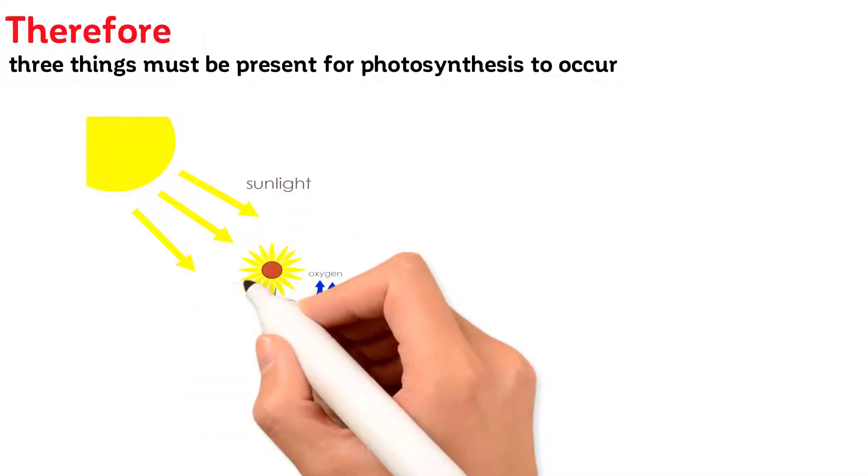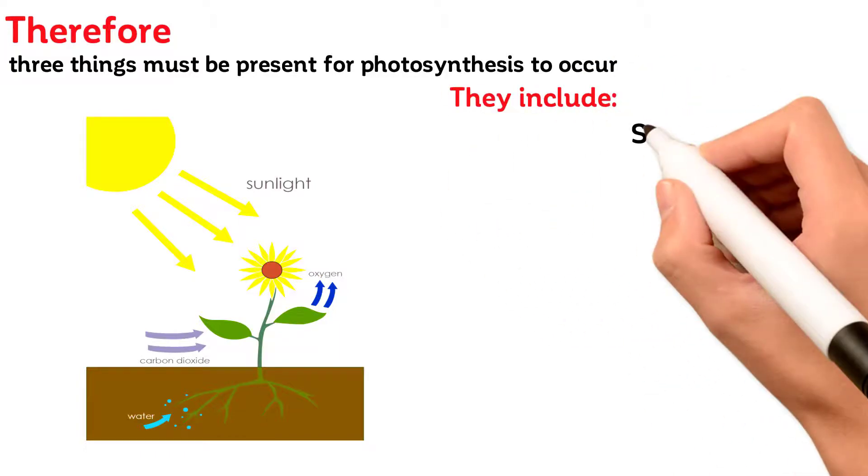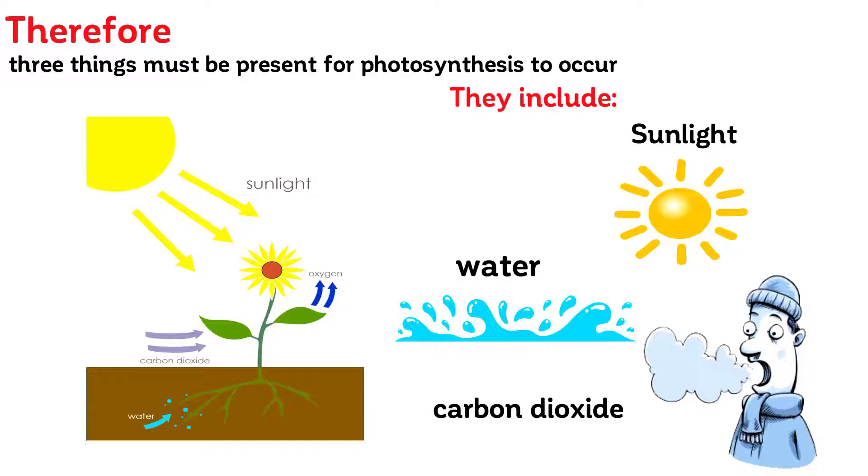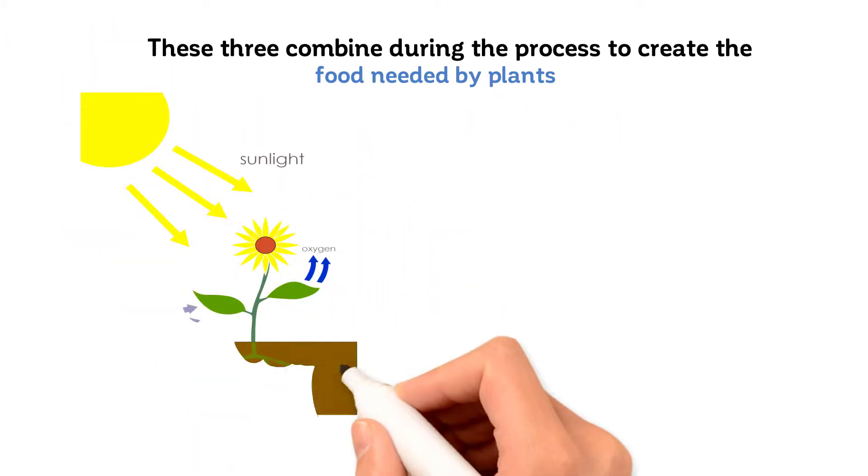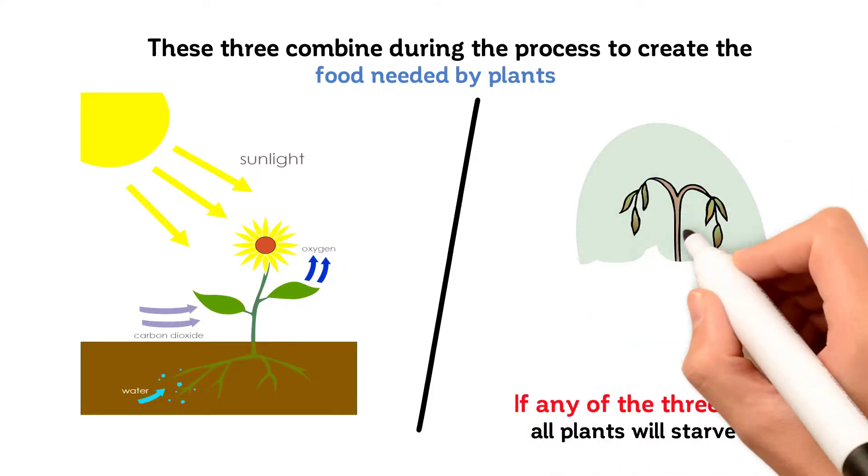Therefore, three things must be present for photosynthesis to occur. They include sunlight, water, and carbon dioxide. These three combine during the process to create the food needed by plants. If any of the three is absent, all plants will starve and die.